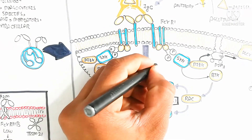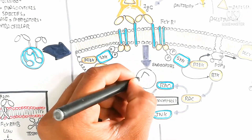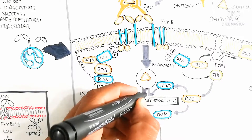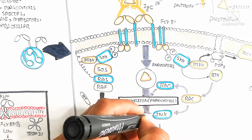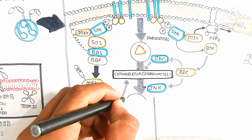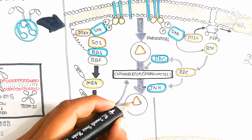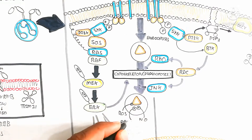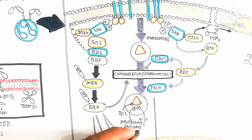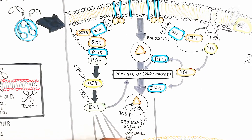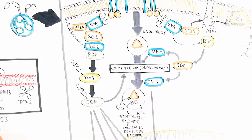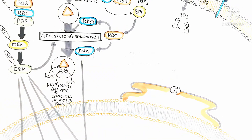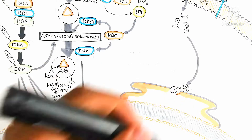Reactive oxygen species are also produced. The cytoskeleton drives endocytosis, phagosome formation, and lysosome binding to form a phagolysosome. Reactive oxygen species are stimulated along with nitric oxide through arginine amino acid. Proteolytic enzymes and lysosomal digestive enzymes are used for neutralization of the phagosome contents. IP3 binds to the IP3-sensitive calcium channel on the endoplasmic reticulum, causing calcium efflux, which stimulates calmodulin for calcium regulation in the cytoplasm.